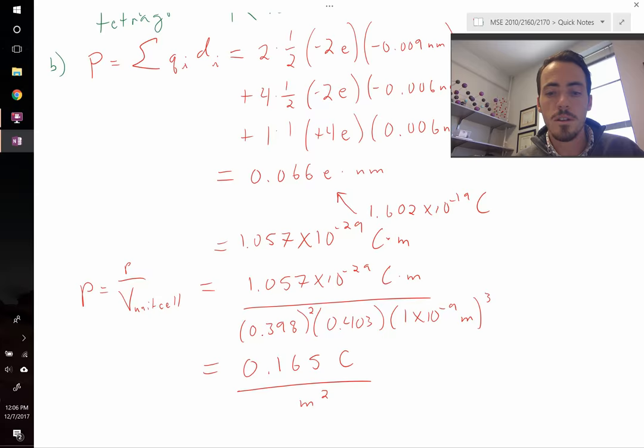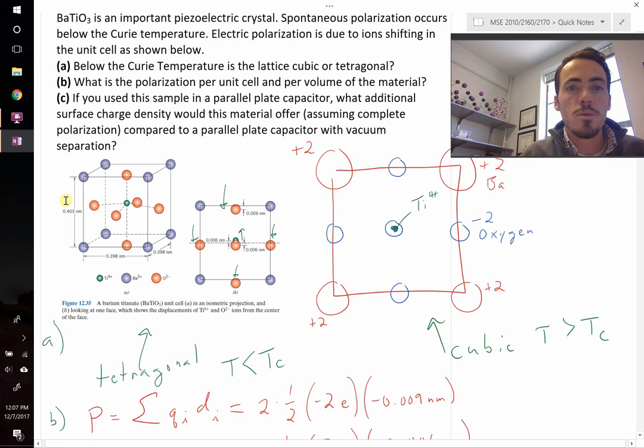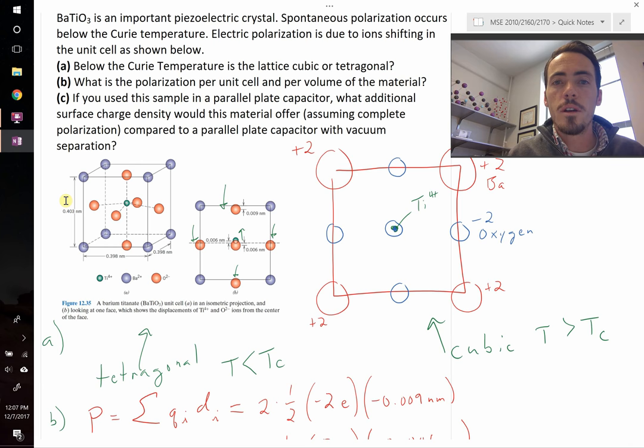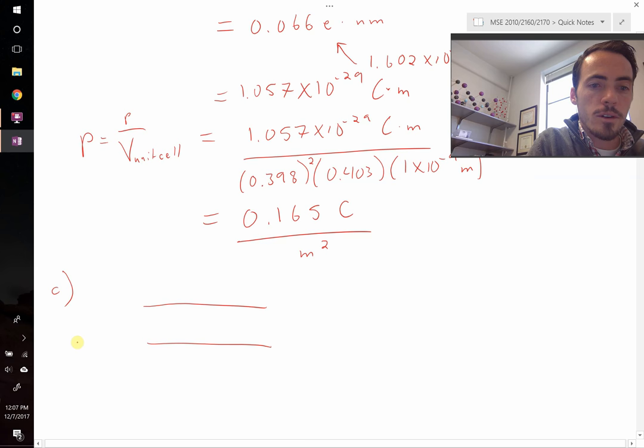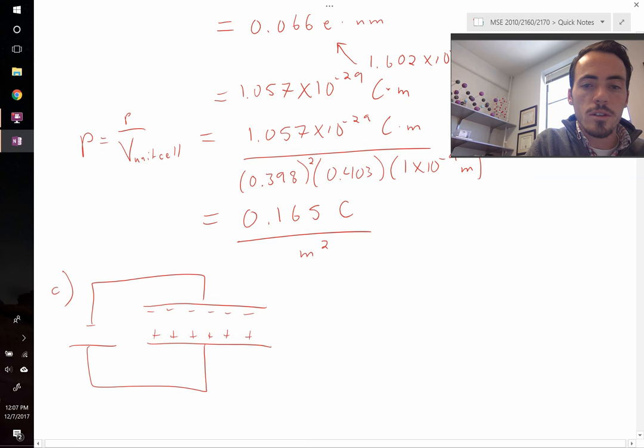Okay, let's move to part C. Part C says, if you use the sample in a parallel plate capacitor, what additional surface charge density would this material offer, assuming complete polarization, compared to a parallel plate capacitor with just vacuum separation? So let's go ahead and draw that out. In a parallel plate capacitor, they look something like this. You have two parallel plates. You have a battery source. First, let's put the positive side that way, negative side this way. So we're going to accumulate negative charge here. We're going to accumulate positive charge here. It's going to be equal to the amount of negative charge. So that's under vacuum.